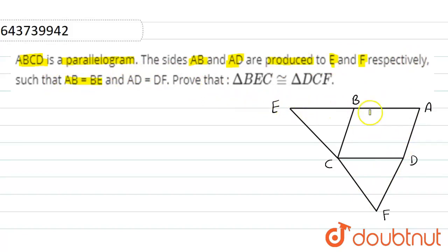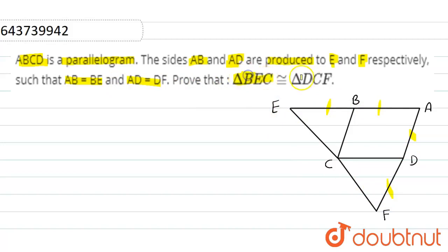Given that AB equals BE and AD equals DF. Prove that triangle BEC is congruent to triangle DCF. We need to prove that this triangle is congruent to this triangle. Let's start with the solution.